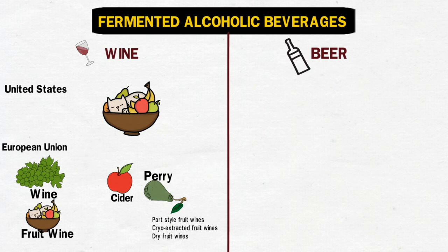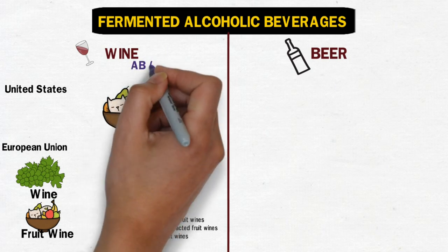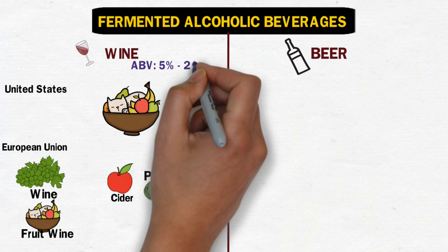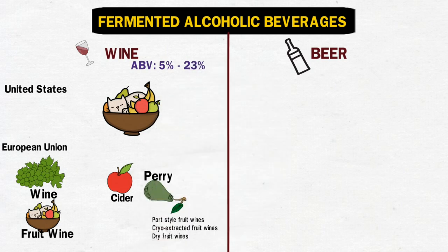Some fruit wines are also named after the fruit they are obtained from — some examples are shown on your screen. The alcoholic percentage of wine may vary from roughly as low as 5% to as high as 23% alcohol by volume, depending on the type of wine. If you want a detailed video on wines, comment below.